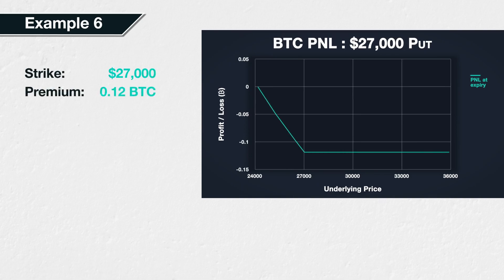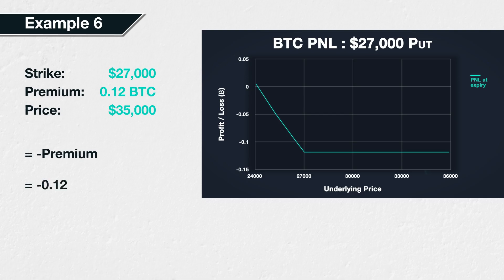One last example. Suppose Bitcoin is currently trading at a price of $27,400. We expect the price to decrease, so we purchase a Bitcoin put option with a strike price of $27,000. The price of this put option is 0.12 BTC. At expiry, the price of Bitcoin has increased to $35,000. The Bitcoin price of $35,000 is well above the strike price of $27,000, so the option has no value and we use the formula: negative premium, giving us negative 0.12. This long put option position therefore made a loss of 0.12 BTC. The maximum a long put option position can lose is the premium paid.